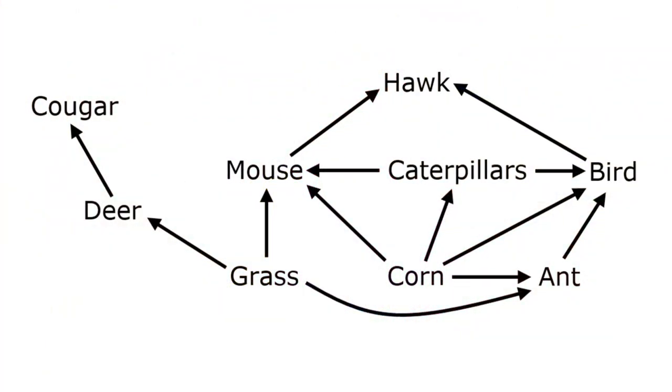So here's your question: what is one type of organism that is missing from this food web? Take a minute and discuss that with your classmates, then I'll be back to talk about the answer.